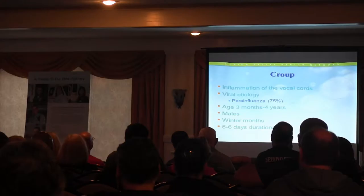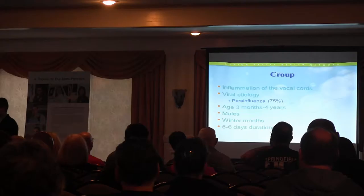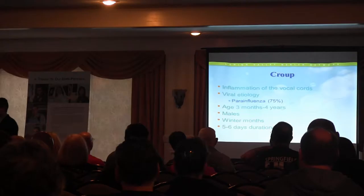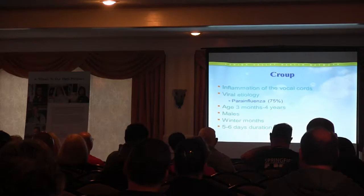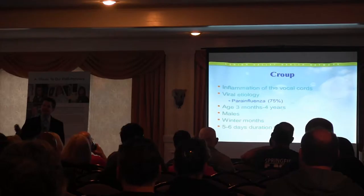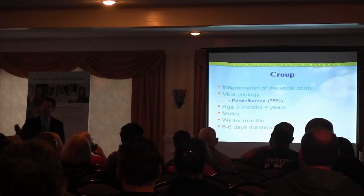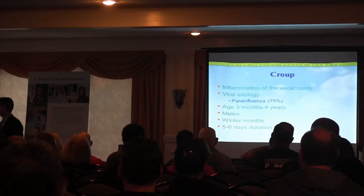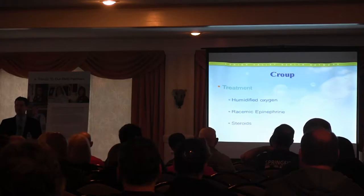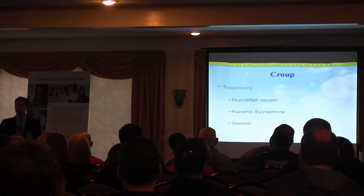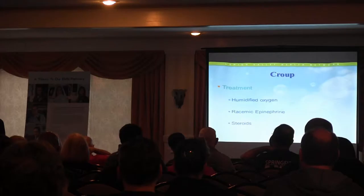Croup is generally not life-threatening but you don't know that up front. It's inflammation of the vocal cords caused almost always by viruses, especially parainfluenza — influenza and RSV can also cause it, but not COVID. Age range is typically three months to four years, more common in males, seen in winter months, and can last a couple of days. Treatment: humidified oxygen, racemic epinephrine, and steroids. I use dexamethasone, which some can even administer pre-hospital — steroids are definitely the way to go.